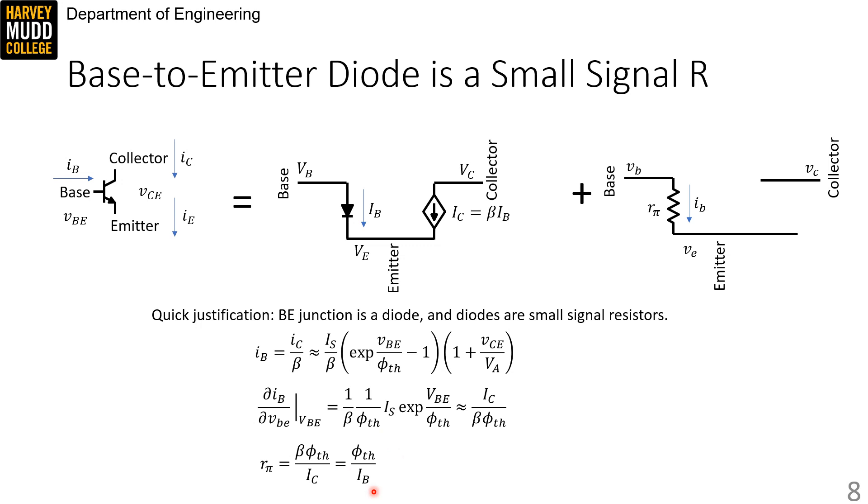And that last expression, phi TH over IB, is exactly identical to the differential resistance of the base emitter diode, assuming non-ideality factor is 1.